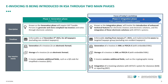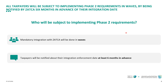Regarding who will be subject to implementing phase two: mandatory integration will be done in waves. We announced wave one on July 1st of 2022; subsequent waves are yet to be announced. Whenever we announce a wave, we will give taxpayers a head start of at least six months in advance to prepare their environment and start integrating with ZATCA's invoicing solution.